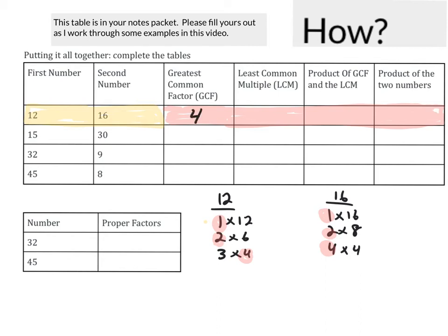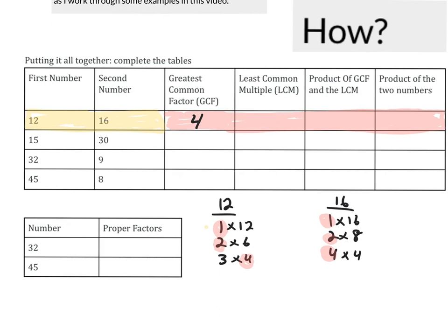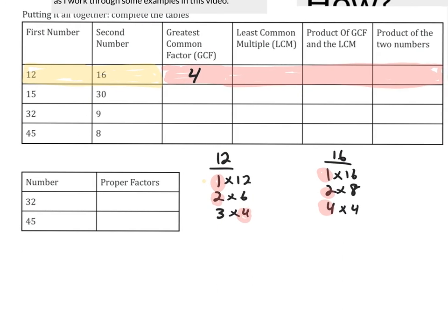Now we need the least common multiple of 12 and 16, so let's list multiples. Multiples of 12: 12, 24, 36, 48. Multiples of 16: 16, 32, 48. The common multiple is 48, and since it's the smallest one shared by both, the least common multiple is 48.